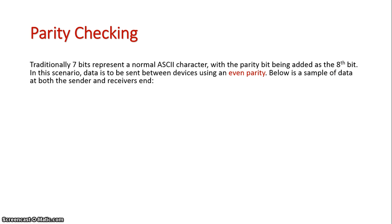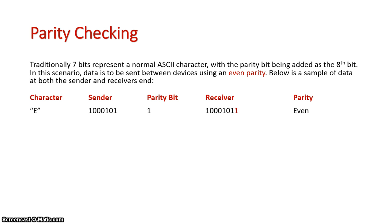Let's look at a data transmission. Traditionally there are 7 bits in a normal ASCII character, and the 8th bit would be our parity bit. In this scenario, we want an even parity for checking our data. We're going to send a certain character — the first one is the capital E: 1, 0, 0, 0, 1, 0, 1. The parity bit is 1, which maintains an even parity.